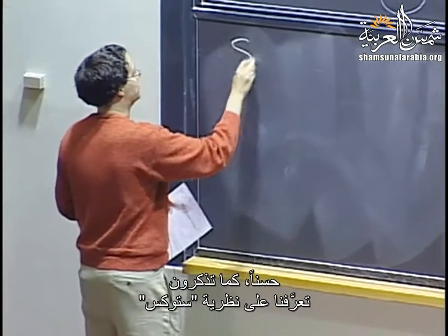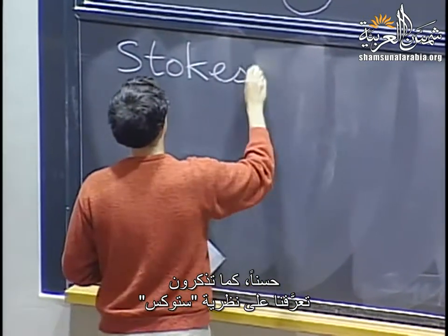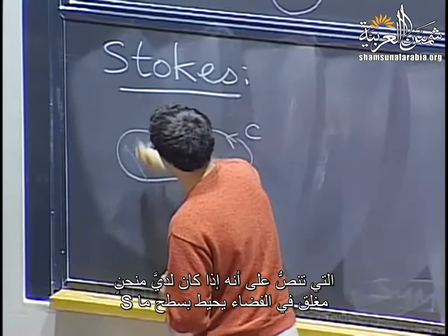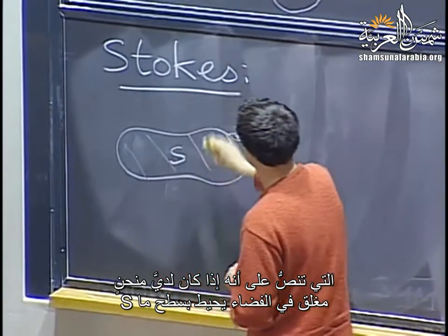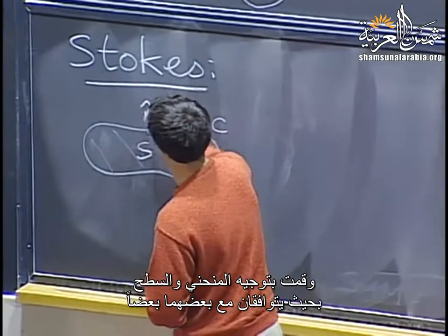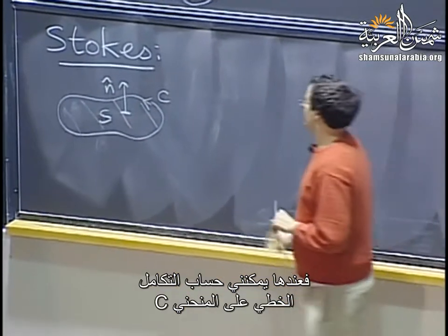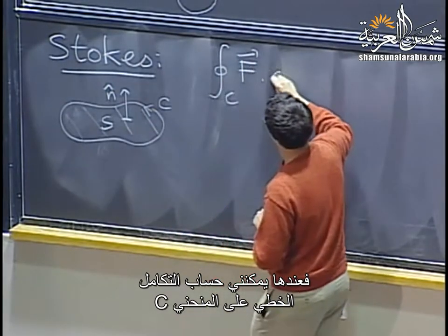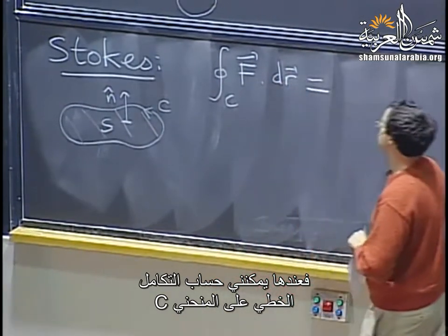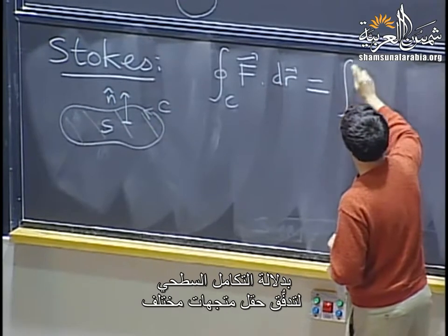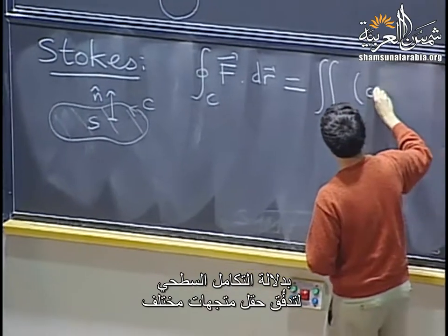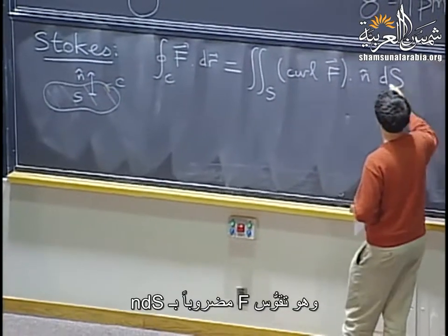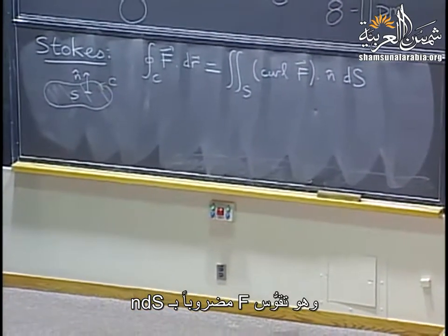We've seen Stokes' theorem, which says if I have a closed curve in space bounding some surface S, and I orient the curve and the surface compatibly with each other, then I can compute a line integral along C in terms of a surface integral for flux of a different vector field, namely curl F · N dS.